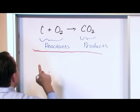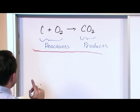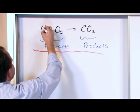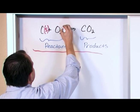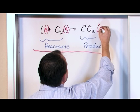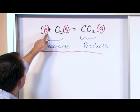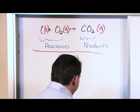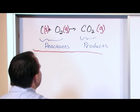We also use chemical reactions to keep track of the state of matter. Carbon is a solid, so we put (s). Oxygen is a gas, so we put (g). Carbon dioxide is also a gas, so we put (g). You'll see these state labels a lot — don't get scared by them. It's just telling you what the state of matter is.